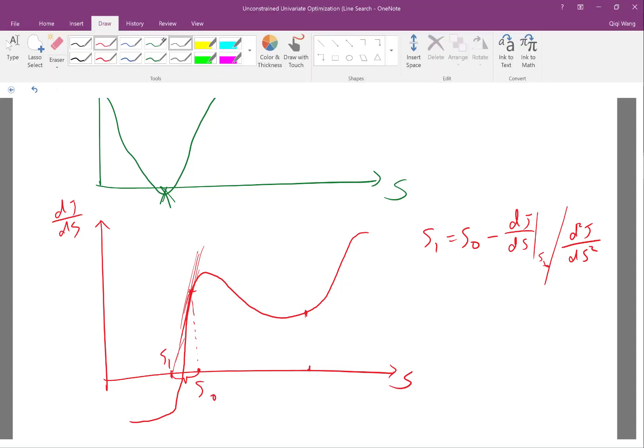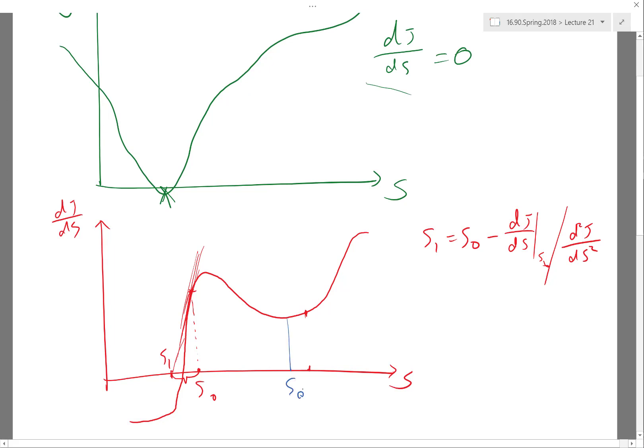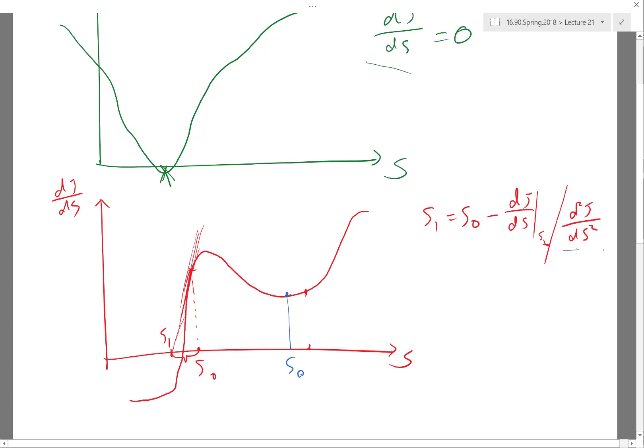But does it work if my S0 is here? It doesn't actually really work because if I start the same formula, my dJ/dS is this point. My second derivative, which is the tangent of this line, is almost flat. So I'm dividing by something that is almost zero, maybe a little bit positive, maybe a little bit negative. The division is either going to take me to positive infinity or negative infinity. So Newton-Raphson only works when you are very close to the solution.